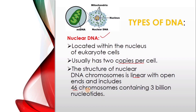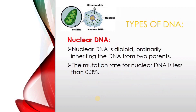Nuclear DNA consists of 46 chromosomes and contains 3 billion nucleotides. Nuclear DNA is diploid, meaning it is transferred from both parents — the father as well as the mother. It is ordinarily inherited from two parents. The mutation rate for nuclear DNA is less than 0.3%.